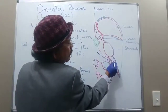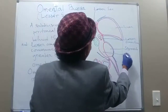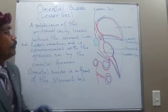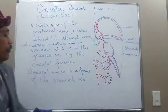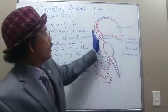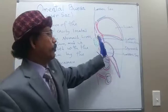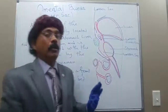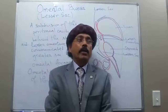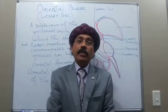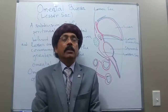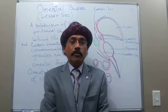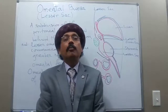So we got the anterior boundary. The posterior boundary is formed by the structures which form the stomach bed. The stomach bed structures are: the diaphragm, the left kidney, the left suprarenal gland, the left colic flexure or splenic flexure, the transverse colon, the pancreas, and the splenic artery.